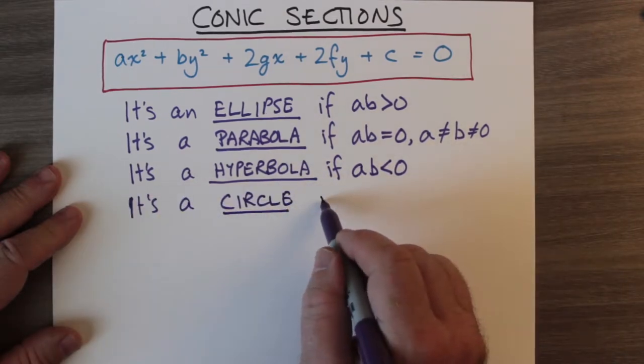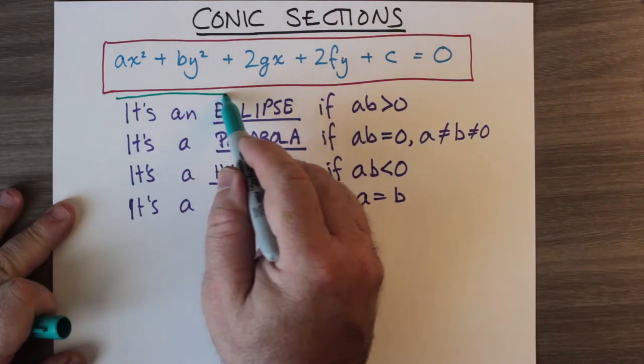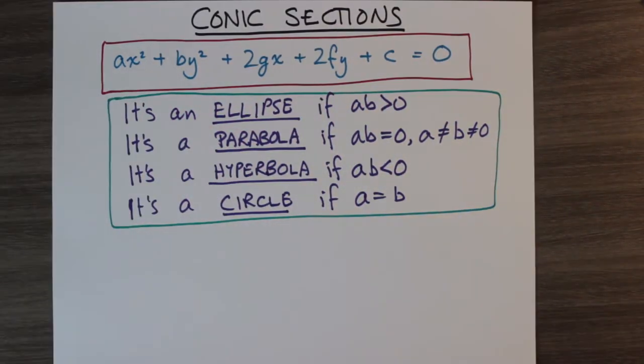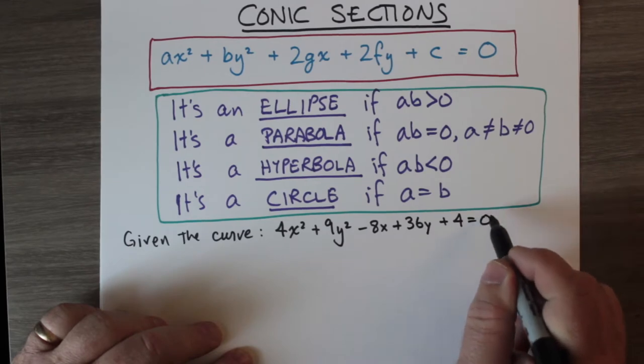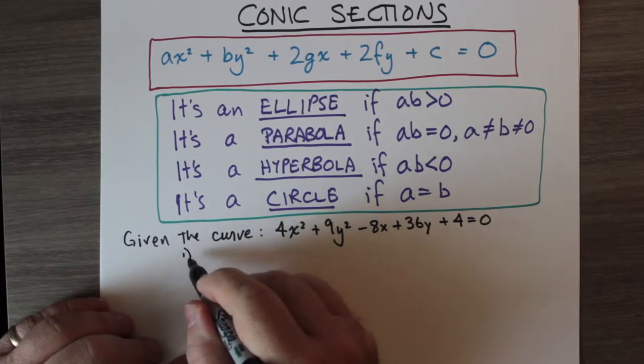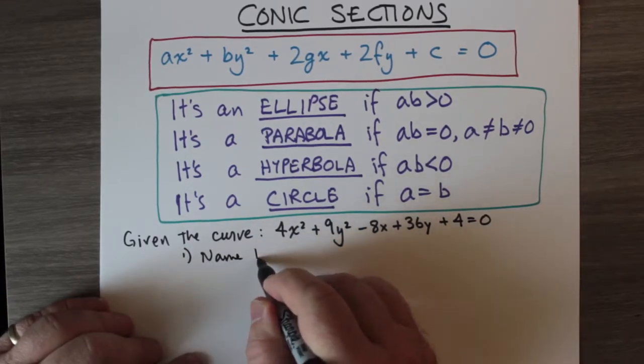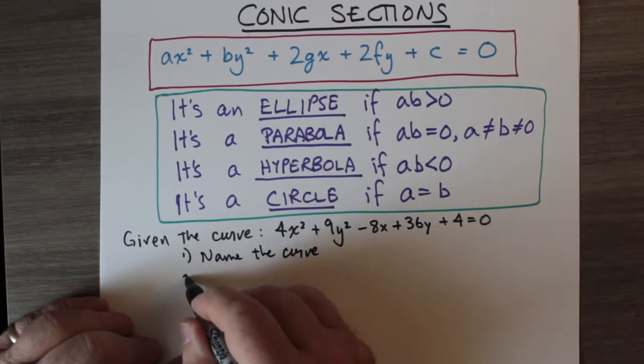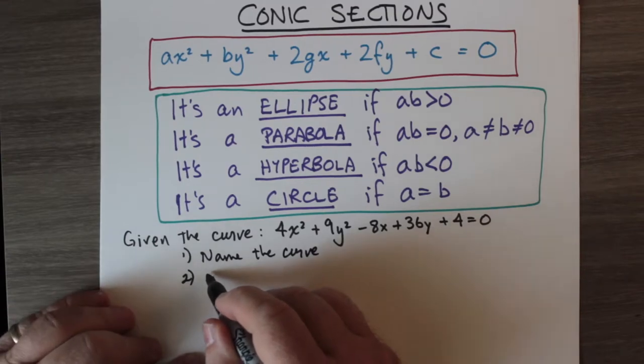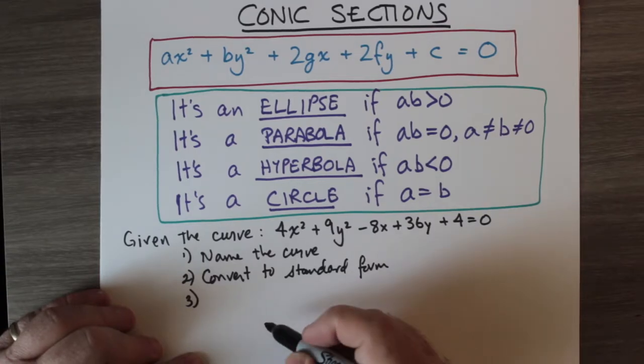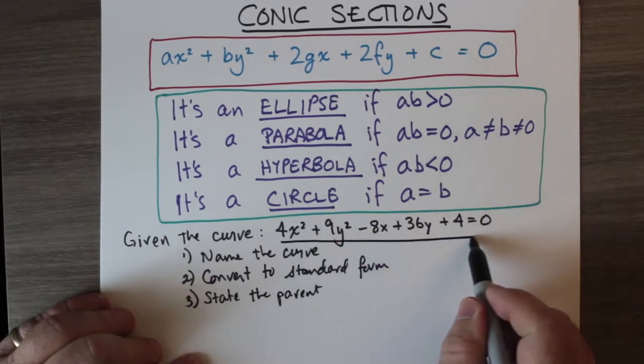So that's a little bit important. We'll be able to just stick that in a box. One thing we're going to look at is suppose given the curve 4x² + 9y² - 8x + 36y + 4 = 0. First of all, identify the conic section - which conic section would this be an equation of? Secondly, convert it to the standard form for that conic section. And lastly, state the parent.